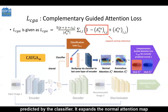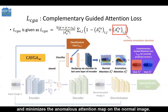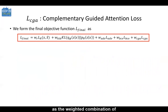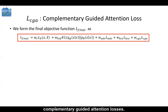We represent the complementary guided attention loss as the following equation, which is satisfied only for the normal images correctly predicted by the classifier. It expands the normal attention map and minimizes the anomalous attention map on the normal image. Hence, in the weakly supervised setting, we form our final objective function as the weighted combination of reconstruction, KL divergence, adversarial, classification, and complementary guided attention losses.